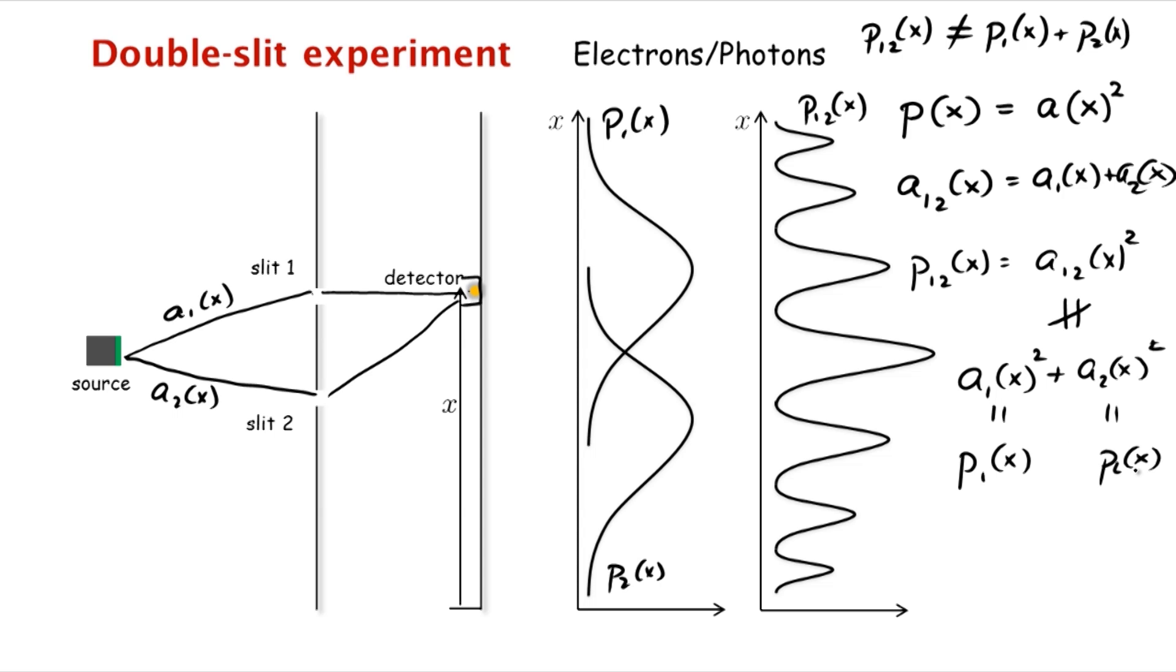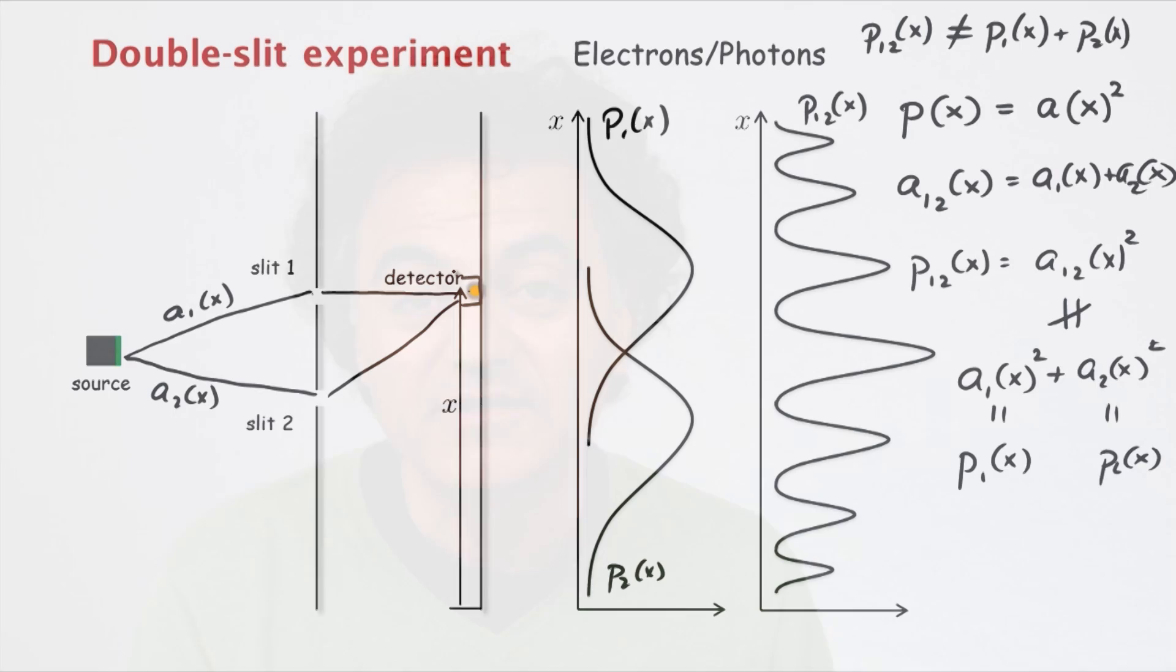So mathematically this is just as simple as the case of water waves. What's problematic about this scenario is what do we make of these probability amplitudes, which are positive or negative? What does it mean that the electron has minus 0.05 amplitude of going through slit one and ending up at x? How do we make sense of this? And what is nature doing behind the scenes to make this happen?